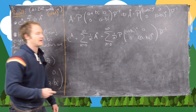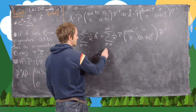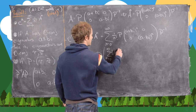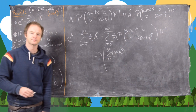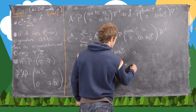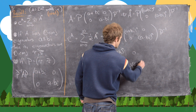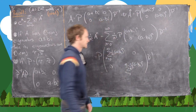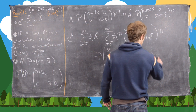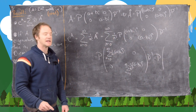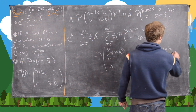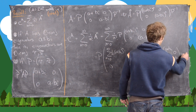Now I'm going to factor P out on the left and P inverse out on the right, and put the sums inside the matrix. That gives P times the matrix whose upper-left entry is the sum from N equals zero to infinity of one over N factorial times (A plus Bi) to the N, and whose lower-right entry is the sum from N equals zero to infinity of one over N factorial times (A minus Bi) to the N, times P inverse. Those sums become e to the (A plus Bi) and e to the (A minus Bi), respectively.